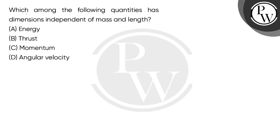Hello children, let's read the question. Which among the following quantities has dimensions independent of mass and length? We have 4 options here, 4 physical quantities, and we have to choose a quantity that is independent of mass and length. That means mass and length dimensions are 0.